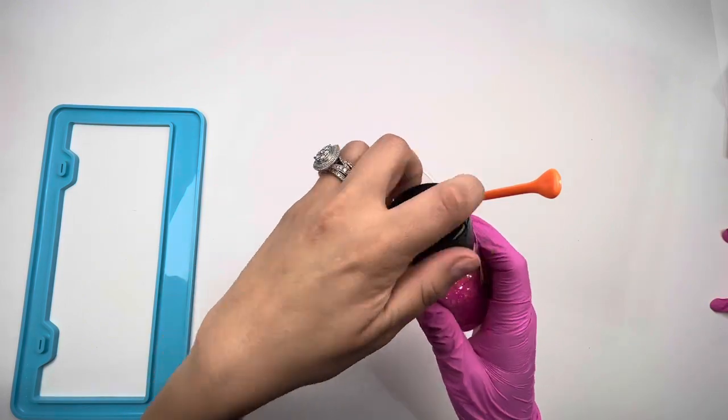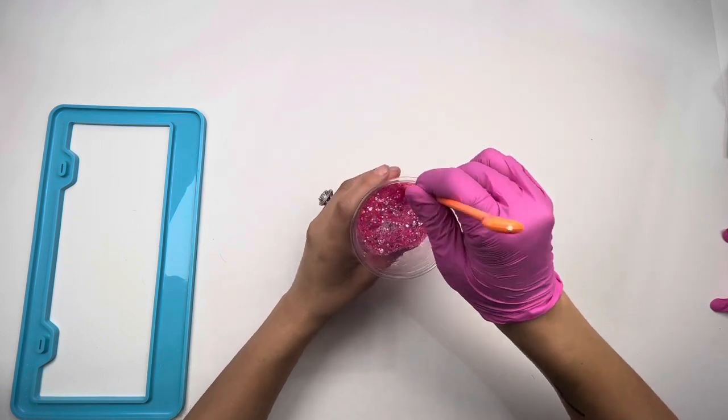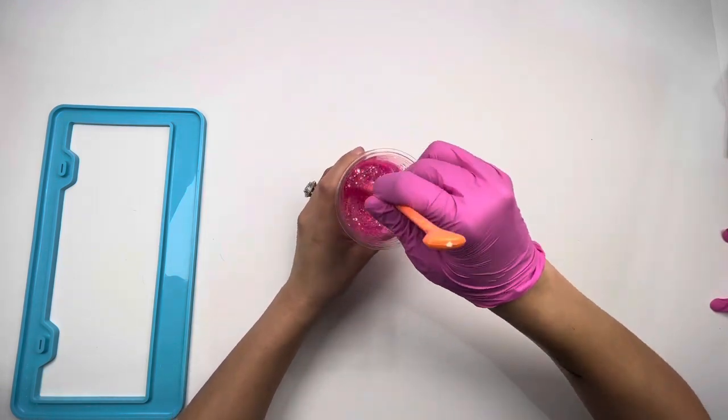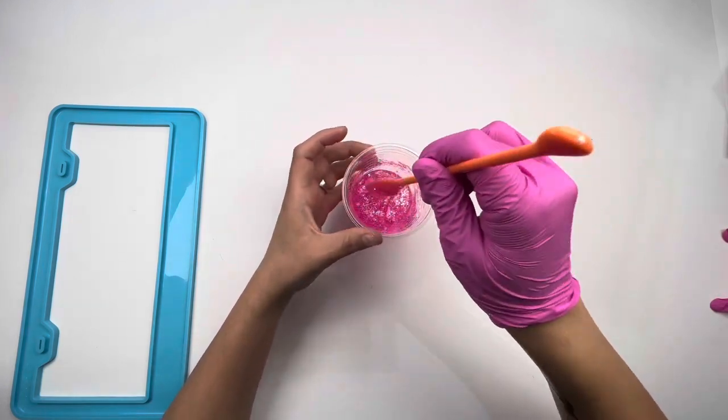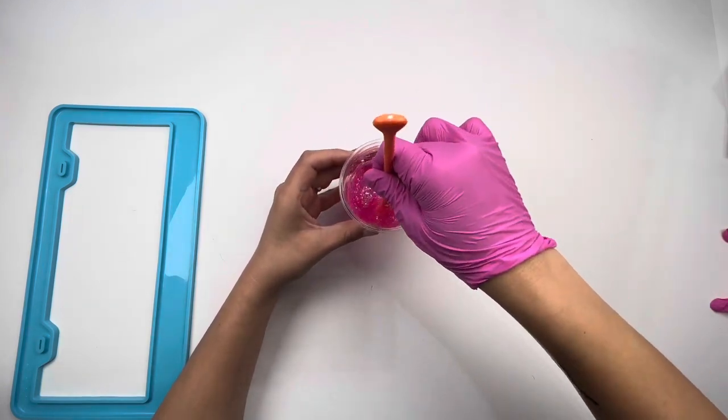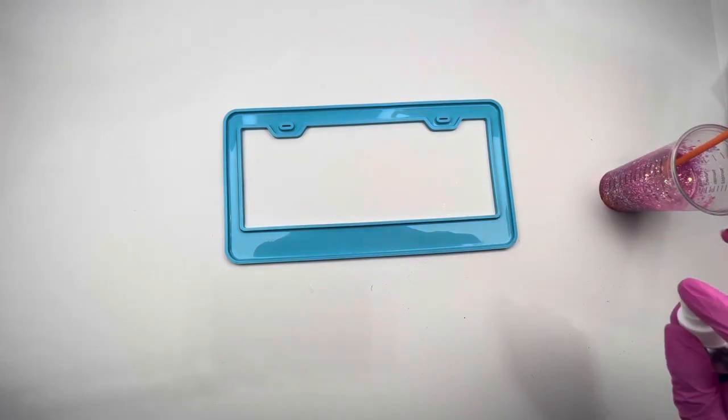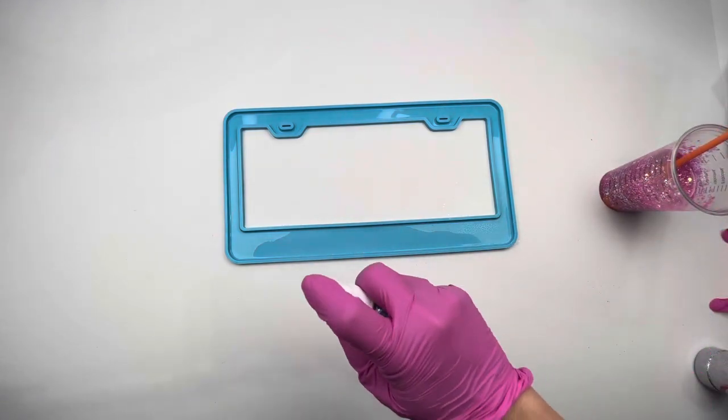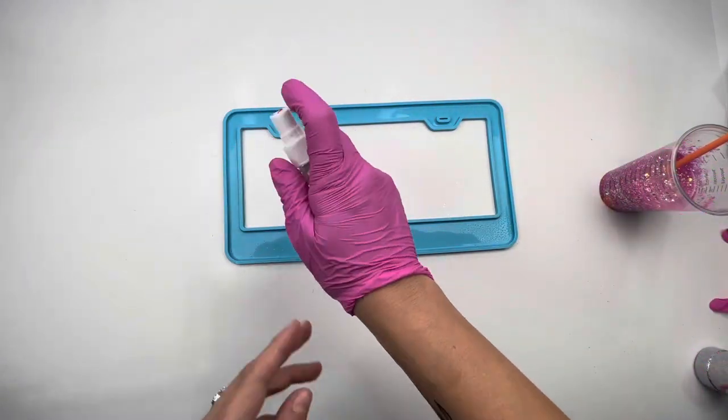So I am going in with Sugar Sweet and Diva, and just making a cute little glittery mix. I normally go for like the super bright neon pinks. But for this, I kind of wanted like a really pretty bubblegum Barbie, just super beautiful pink, but not necessarily neon.